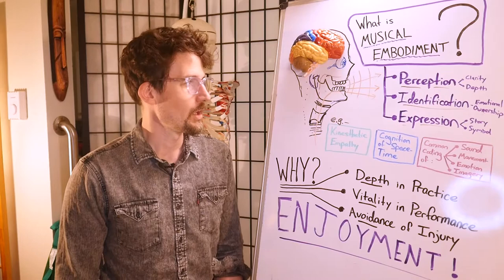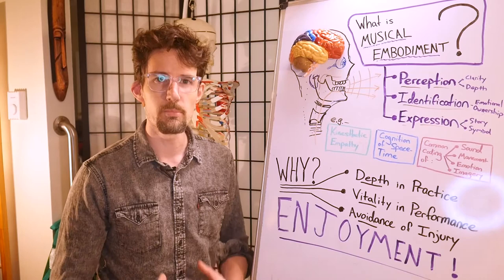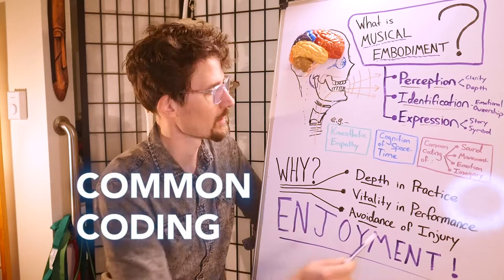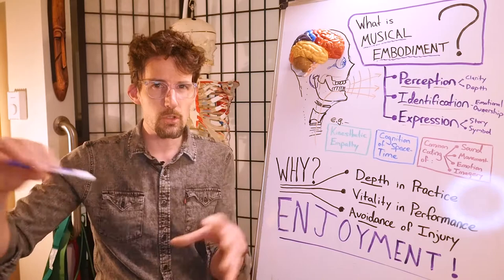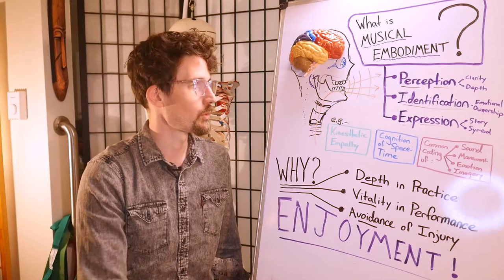We also know that a well embodied nervous system is able to learn music more fully. We're able to do things that is called common coding of sound, of movement, of emotion, of imagery. We're able to learn more dimensions and then express those dimensions musically if we are more fully embodied.